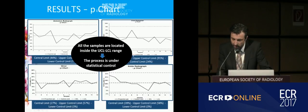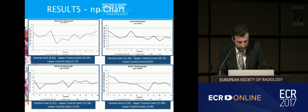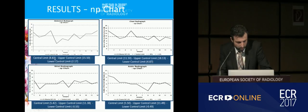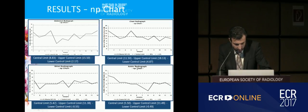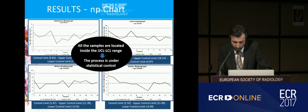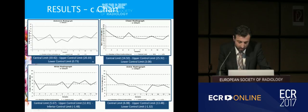The process is, as we say, under statistical control. In the NP chart, for the abdominal radiograph, a central limit of 8.83%; in the chest radiograph, a central limit of 11.5%; in the wrist, 5.4%; and in the ankle, a central limit of 5.5%. Also, the process is under statistical control.